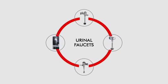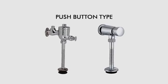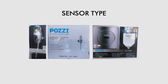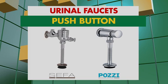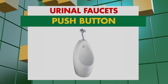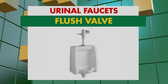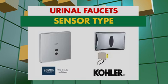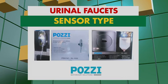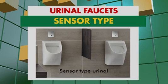Ang urinal ay karaniwang ginagamit sa commercial application, kaya sa tamang pagpili ng urinal flasher na gagamitin ay kailangan pag-isipang mabuti. Ang urinal faucets na available sa Wilcon ay may tatlong klase: push-button type, flashbulb type, at sensor type. Ang push-button type ay available sa Cepa at Posee brand, compatible para sa maliit na urinal. Ang flashbulb type naman ay available sa Cepa at Slow 1 brand, compatible sa malaking urinal. At ang sensor type ay available sa Grohe, Kohler, at Posee brand, compatible naman sa sensor type na urinal.